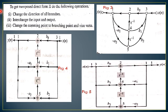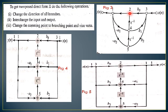To get the transpose direct form 2, we need to do the following operations: interchange the input and output, change the direction of all the branches. In the signal flow graph, we change input and output and change the direction of all branches. We also change summing points to branch points and vice versa - wherever you find branch points, make them summing points, and wherever you find summing points, make them branch points.